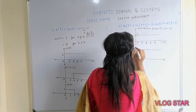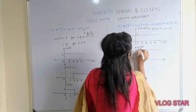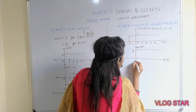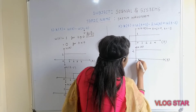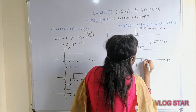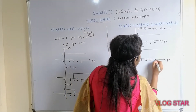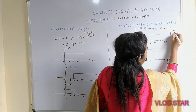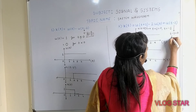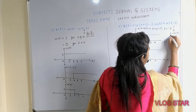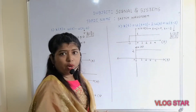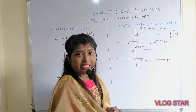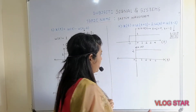So the amplitude of 2·u(t) would be equal to 2. Similarly, you need to plot the third signal, u(t − 1). Set t − 1 = 0, so t = 1. This means the unit step signal will shift to the right at t = +1.